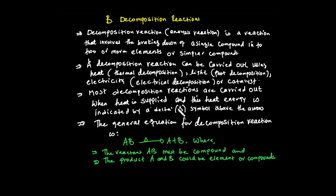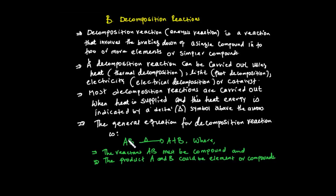The energy supplied is indicated by delta (Δ), which represents the heat supplied. Delta is the symbol for heat. The general equation for a decomposition reaction is: a single compound AB → A + B. The reactant must be a single compound, and it breaks down into two or more products.